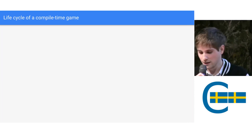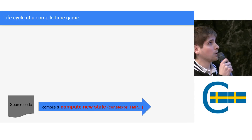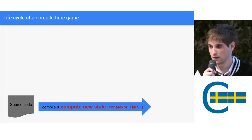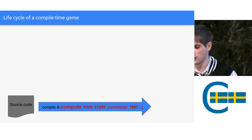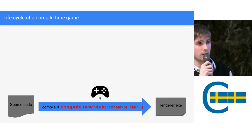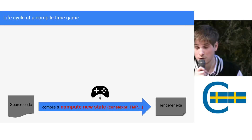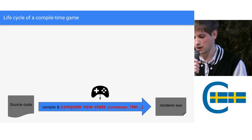So what would be the lifecycle of a compile-time game? We still need to run some kind of game logic, so we still have some source code to run that logic, and we will compile again. But this time, instead of just compiling, we will also run the game logic within the compilation phase. This is possible in C++17 using constexpr or template metaprogramming, which permits you to interpret some code at compile time. Since we are computing the new state, we also need to inject the player inputs at that point in time.